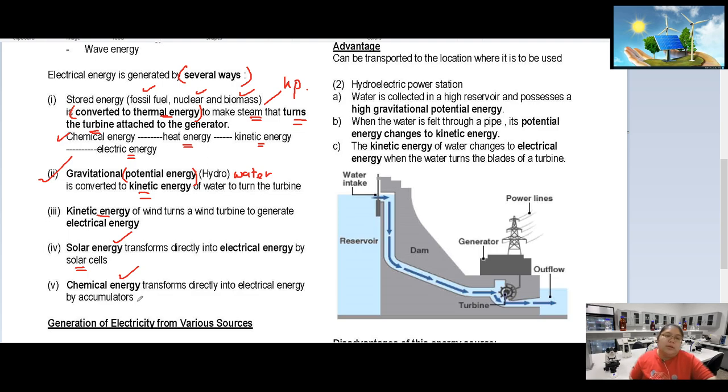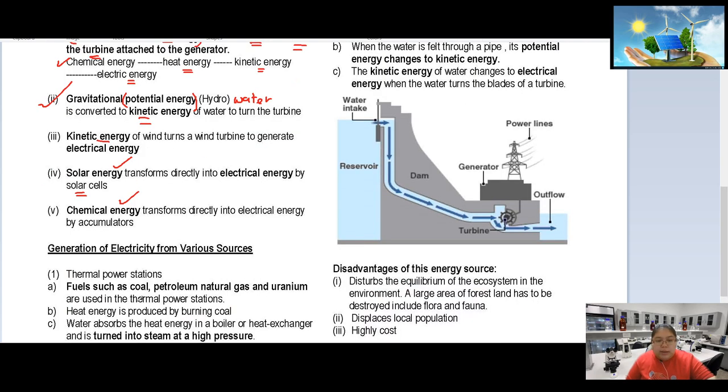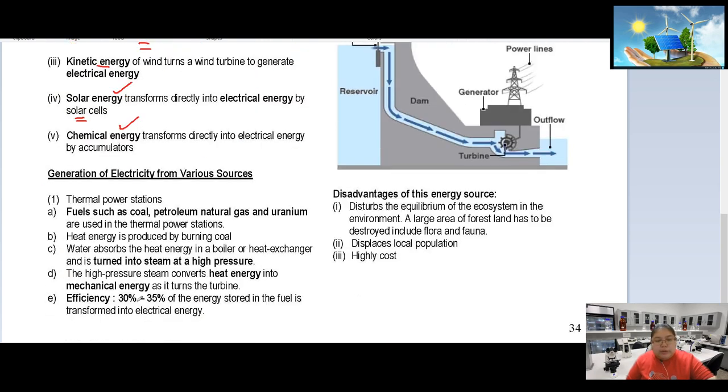The last one is chemical energy, which is transformed directly into electrical energy by an accumulator. These are examples of how energy generates electricity by several methods.